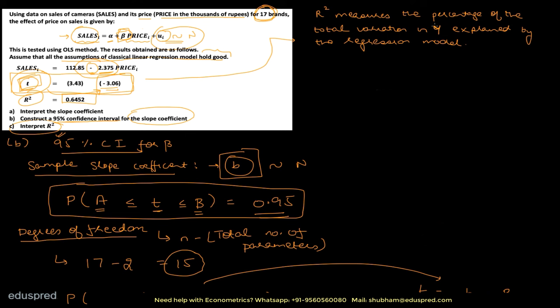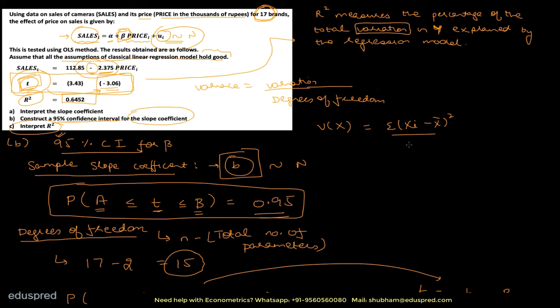In this interpretation, y is the dependent variable. Note that R-squared explains total variation, not variance — these are different. Variance = variation / degrees of freedom. Specifically, variance of x = Σ(xi − x̄)² / (n−1), where the numerator is the variation in x. In our case, R-squared = 0.6452.